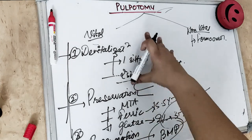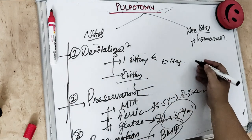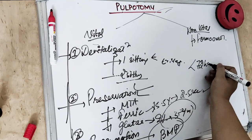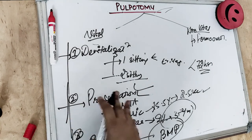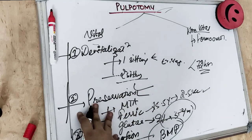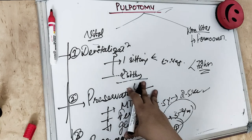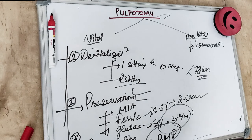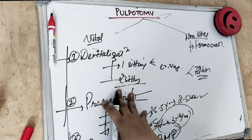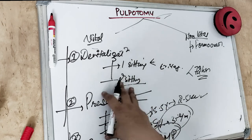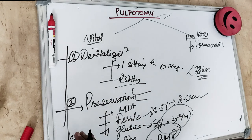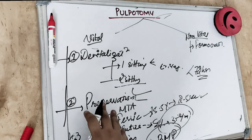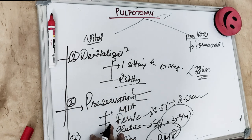In summary, pulpotomy involves removing the coronal portion of the pulp when the exposure is less than 72 hours. If it is more than 72 hours, we proceed with pulpectomy. We have studied pulpotomy for both primary and permanent teeth, including calcium hydroxide pulpotomy and formocresol pulpotomy. If this video helped you understand the topic, please like and comment — it motivates the creation of more video lectures.